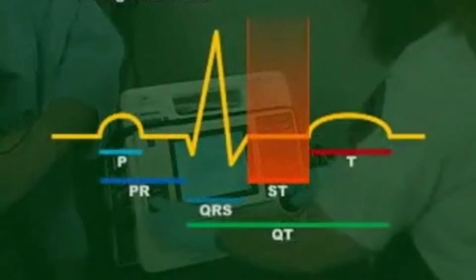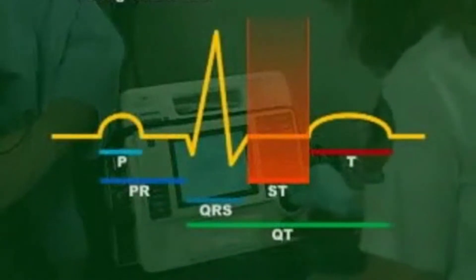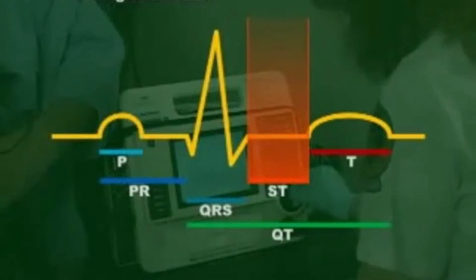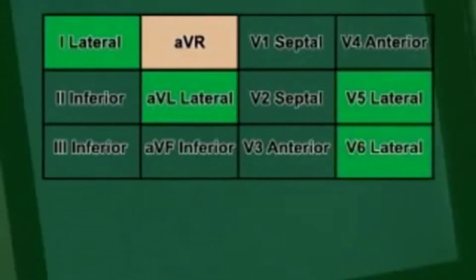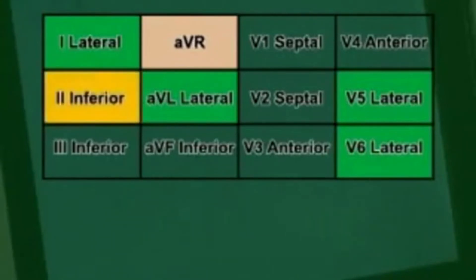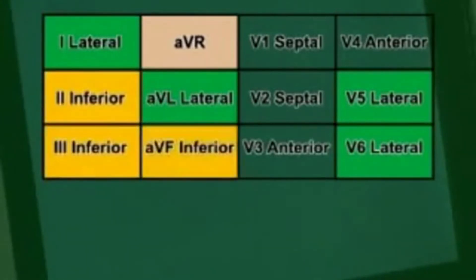Remember, STEMI is considered ST elevation of greater than 1 mm in two or more contiguous leads. Leads 1, AVL, V5, and V6 are contiguous leads and represent the lateral wall. Leads 2, 3, and AVF are contiguous leads and look at the inferior wall.